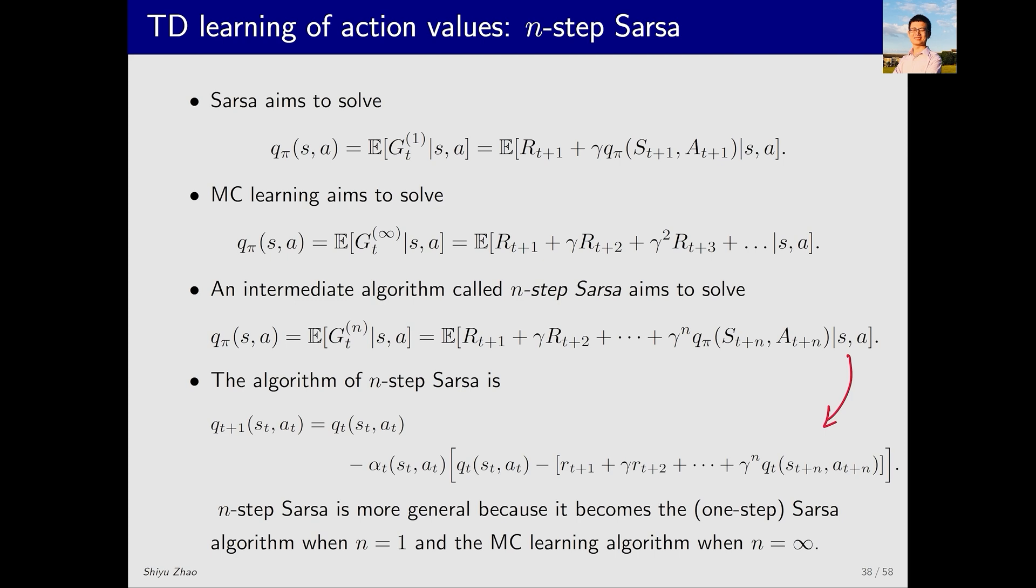This is the corresponding stochastic approximation algorithm. In this algorithm, the left side is QT plus 1 for ST, AT and the right side is QT minus alpha T times QT minus this term. The difference from the previous SARSA and expected SARSA lies in the TD target.